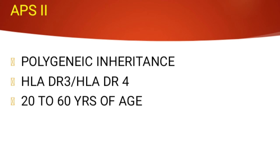APS type 2 is more commonly seen in females, and the most common age group is 20 to 60 years of age. The conditions associated with APS type 2 are type 1 diabetes mellitus, Addison's disease, and autoimmune thyroid conditions, which include Graves' disease and Hashimoto's thyroiditis.